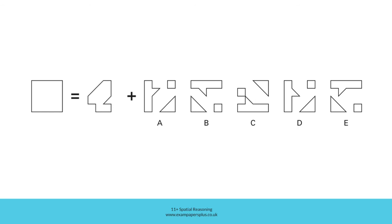In order to answer this question, we're going to consider which one of these answer options represents the collection of shapes which should be added to this shape to create this target shape. In other words, this shape added to one of these groups of shapes will go together like a jigsaw puzzle to create the target shape, which as you can see is a square.